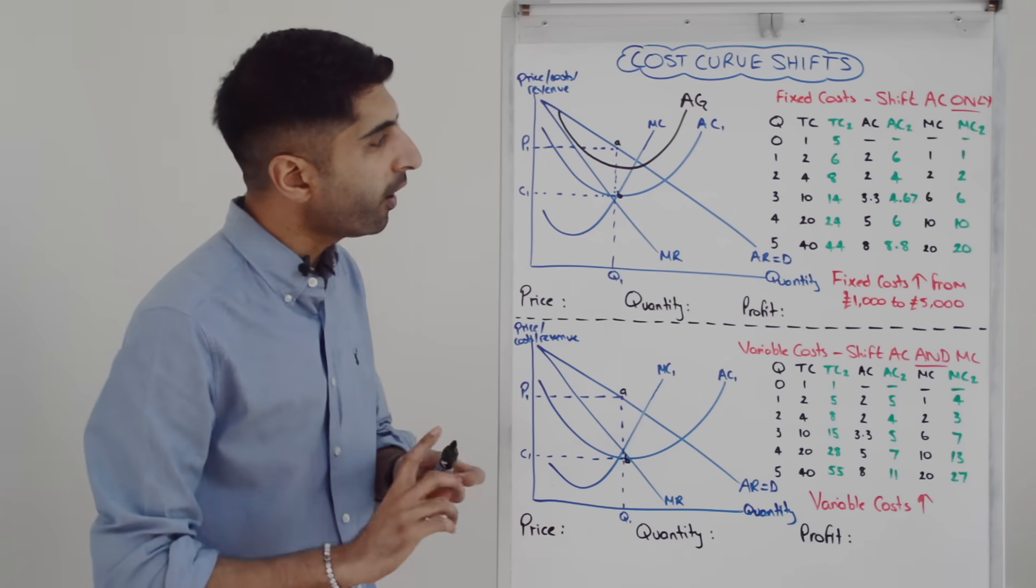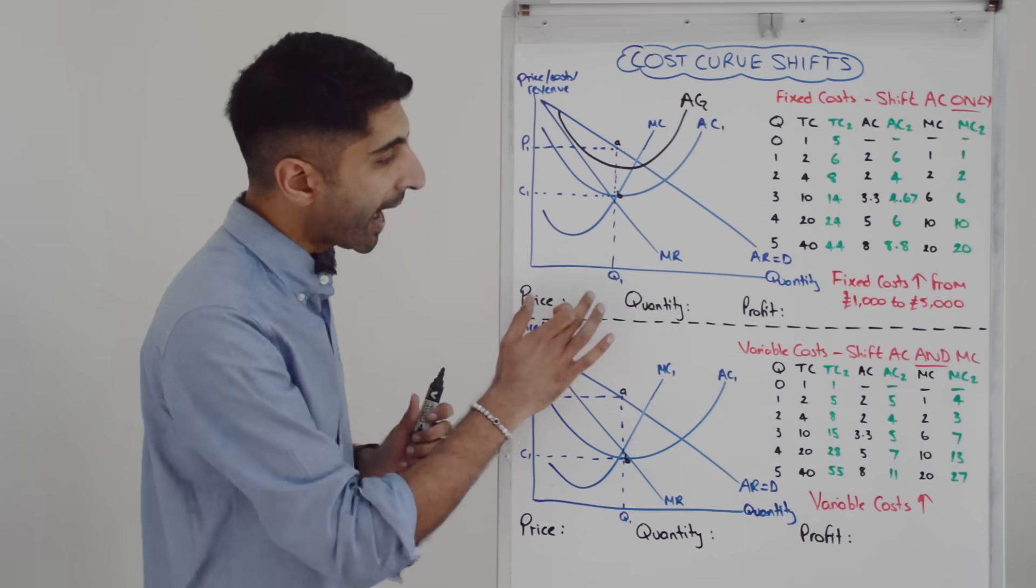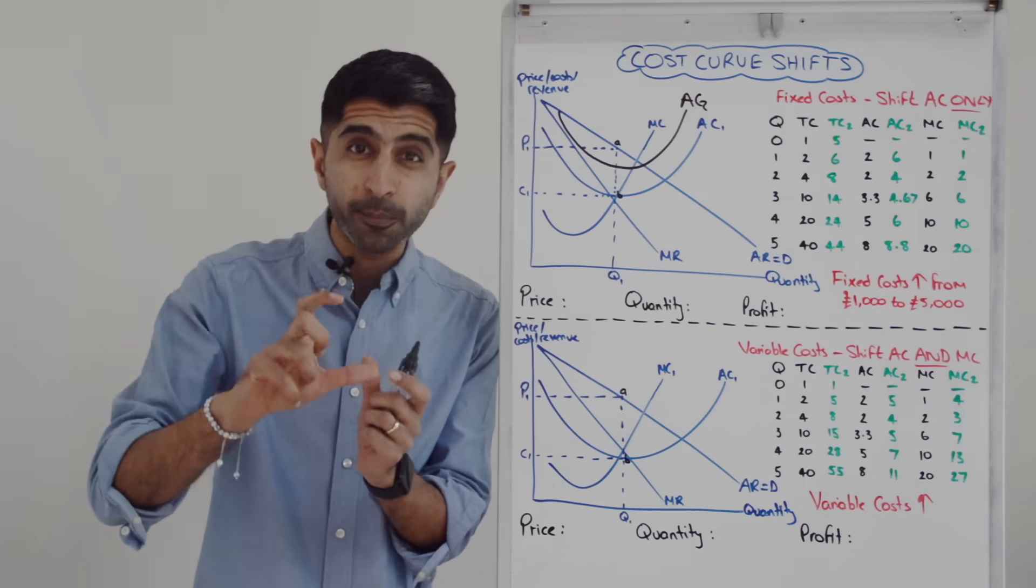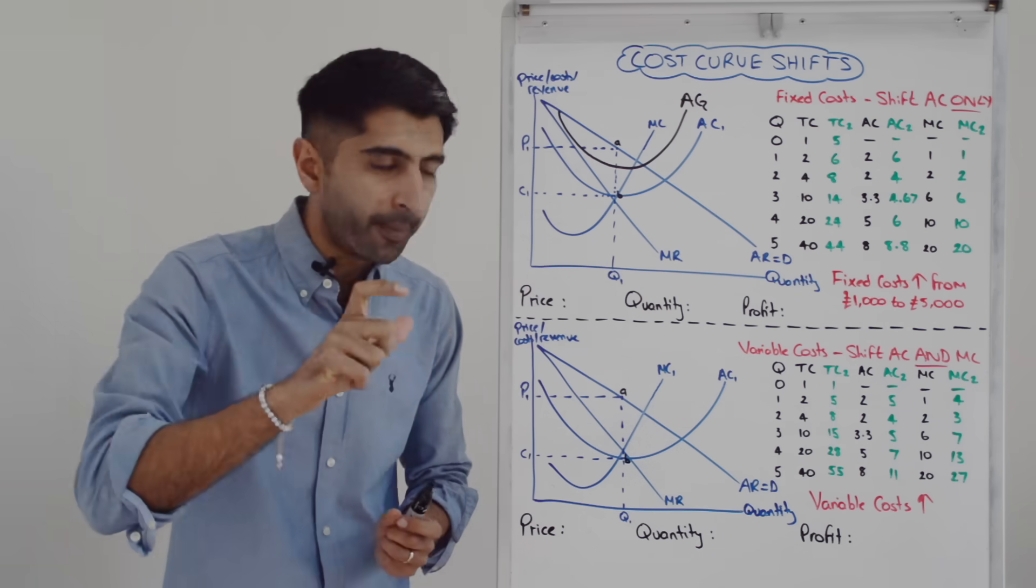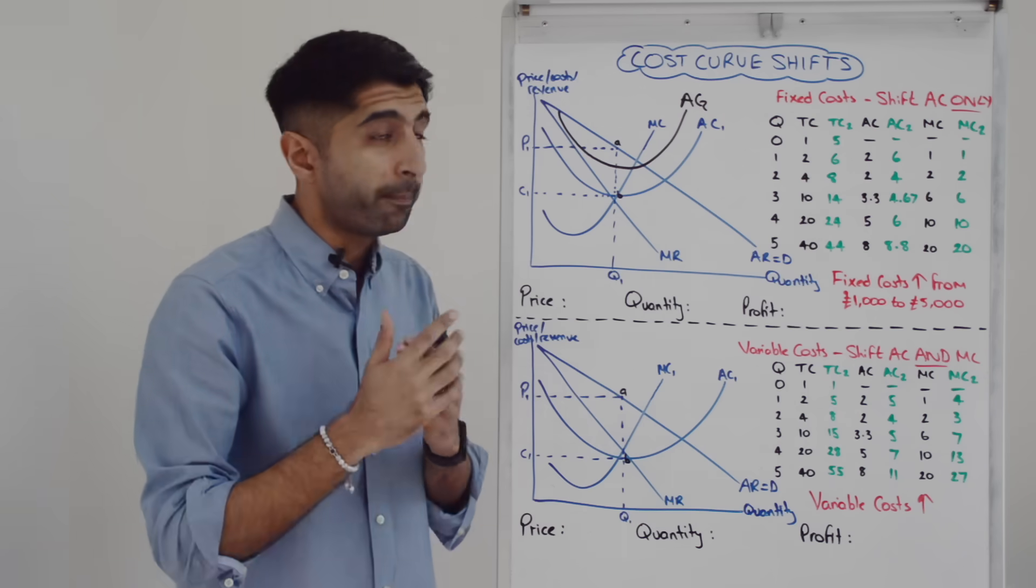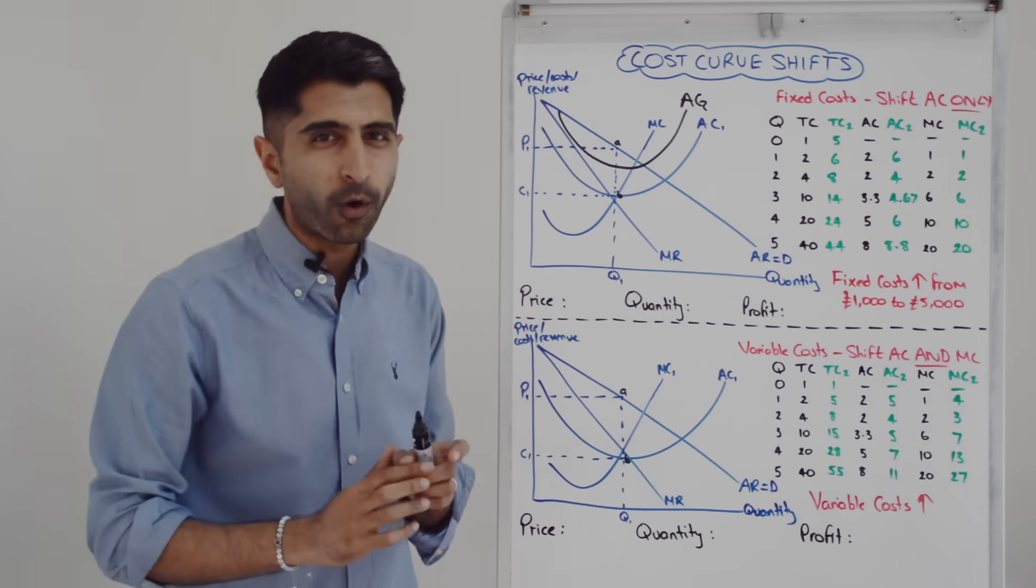So before with AC1, the level of profit being made at profit max Q1 was the difference between AR point A and AC point B. That was the profit per unit multiplied by Q1. You got the box of profit P1, A, B, C1.